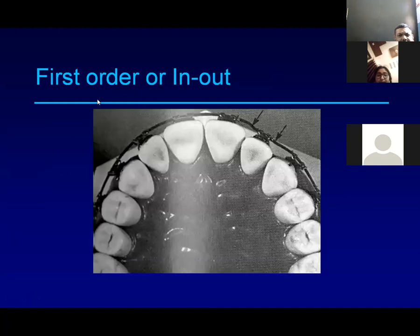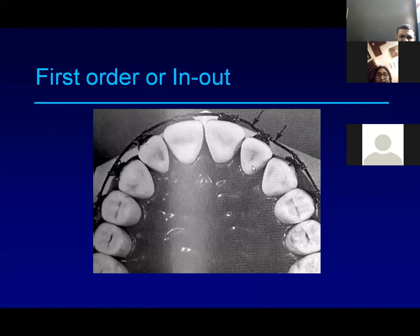First order bends are horizontal bends in the wire. If a tooth has moved outside the arch, a first order bend is placed horizontally in the arch wire to push that tooth back inside the arch. This corrects the in-out position of the tooth.